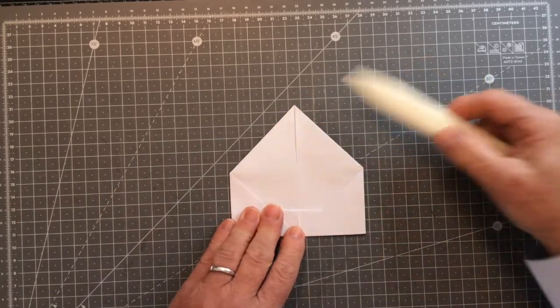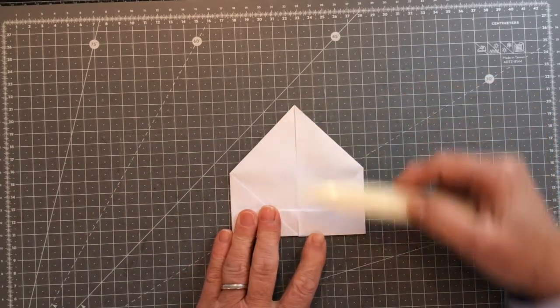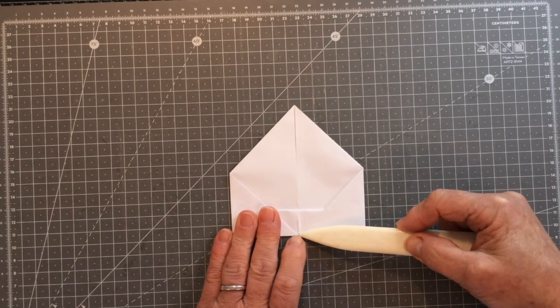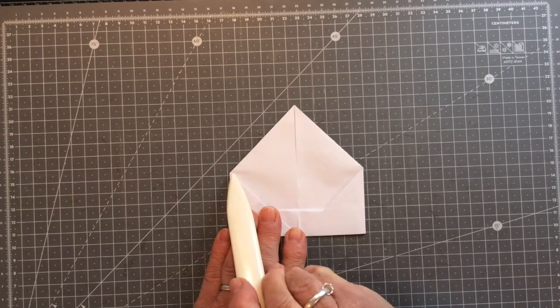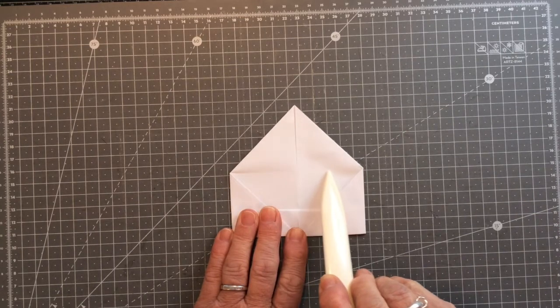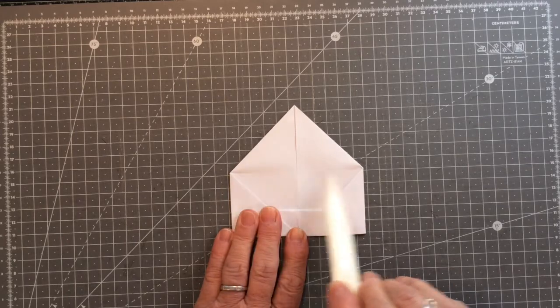So what we want to do now is we want to bring this point up here down to this point down there. Now when you do that fold your crease line should automatically go across from these two points here and here.